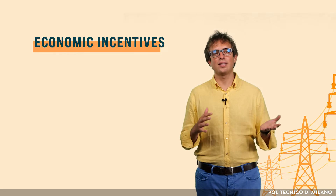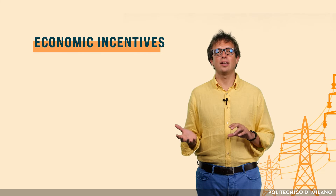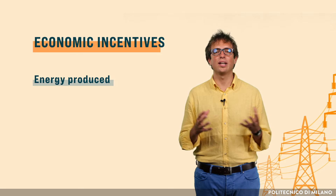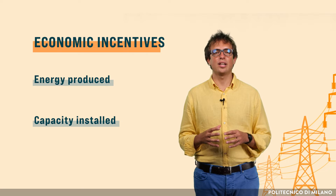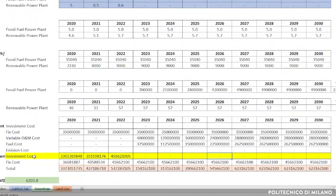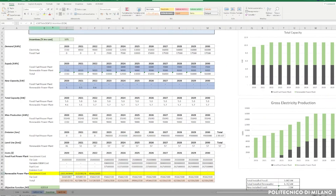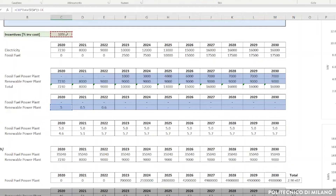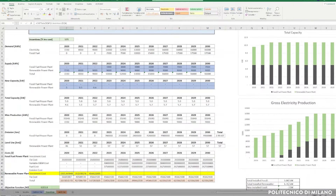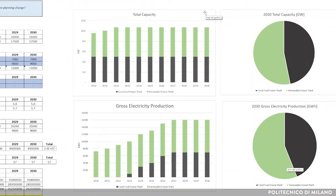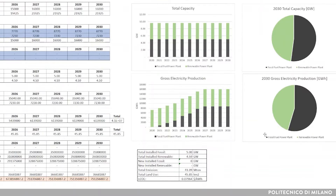To simplify the issue, we can distinguish between two different types. The first one deals with the energy produced and can be represented as a feed-in tariff, while the second deals directly with the capacity installed, and this is the case considered in this exercise. Basically, what we have to change is the row related to investment costs for renewables, which are the technologies affected by the incentives scheme we would like to simulate. In this row, we have to decrease the amount of investment by the percentage desired, in this case 10%. The outcomes of this scenario can be appreciated by looking at the results, especially for what concerns the installed capacity. You can see from this graph that a greater amount of renewable technologies is projected to be installed with respect to the baseline case.